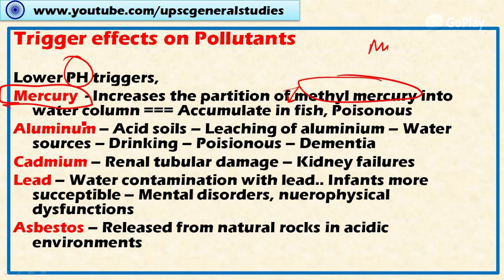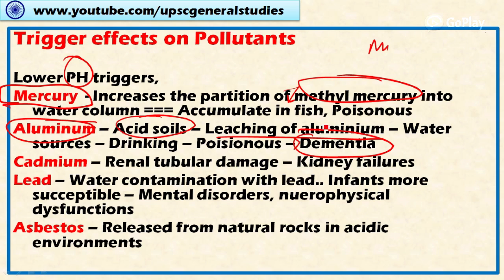Acid soils result in the leaching of aluminum, and the subsequent runoff of aluminum into water sources may affect the quality of drinking water. In severe cases, this can cause dementia — a disease where degeneration of the brain occurs — resulting in perpetual loss of memory, for which there is no cure.